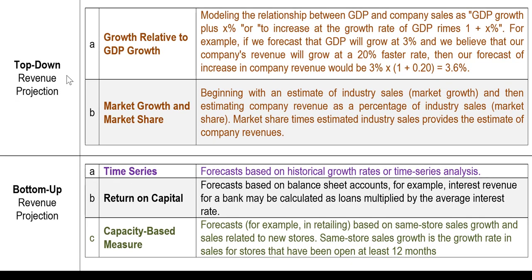The top-down procedure focuses on the aggregate market and economic conditions. For the economy, we focus on GDP growth. For the market, we look at market revenue or industry sales growth, and how that relates to the individual company's revenue projection.